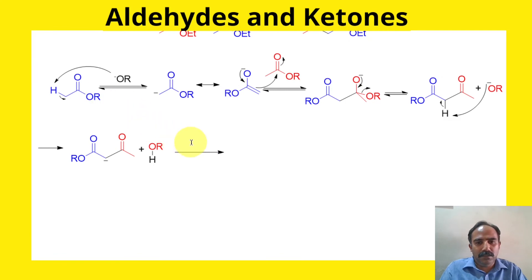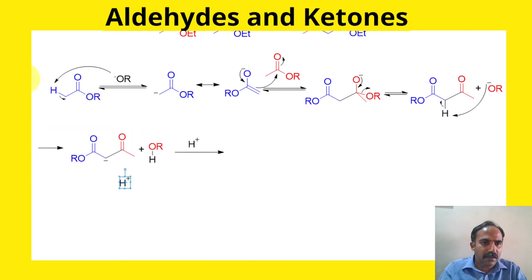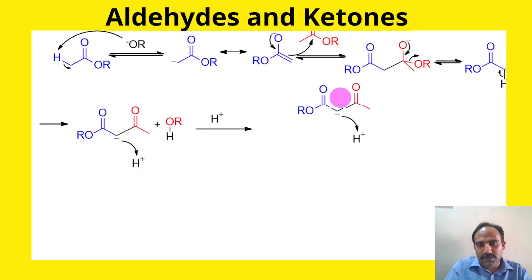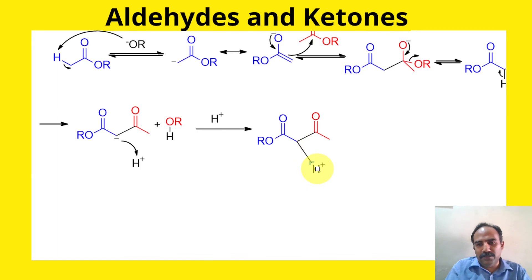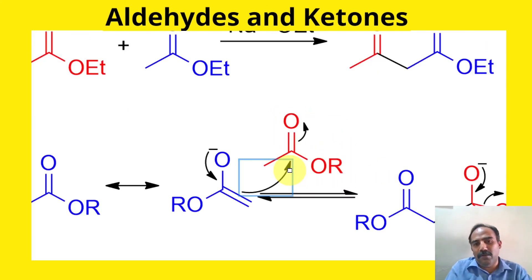Now we can add water or dilute mineral acid (H+). This protonates the carbanion: the carbon picks up a proton, forming a new C–H bond, and the carbon's negative charge is lost as those electrons enter the bond. We regenerate our beta-keto ester, which is the final product.